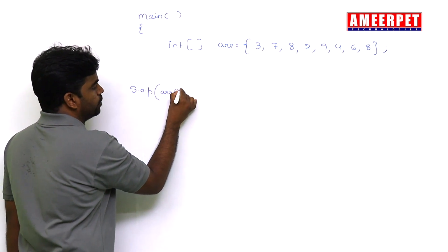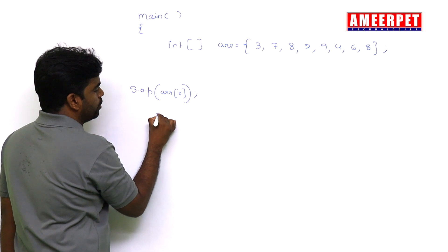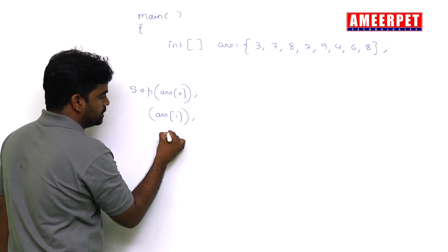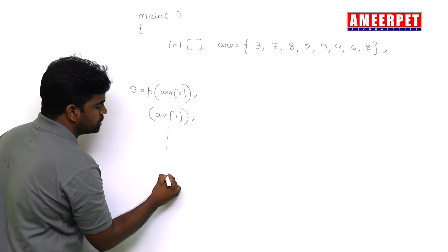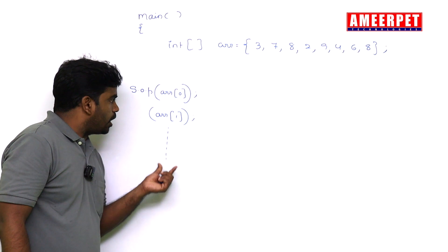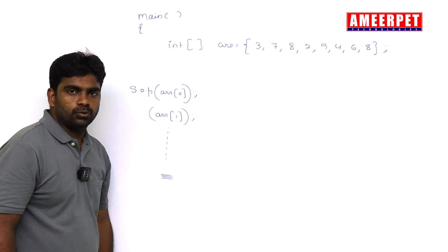ar[0], ar[1], ar[2], like this we need to display. And we don't know, suppose, what is the length. So how long, how many times we need to repeat that loop? I mean, how many times we need to write that sop statements?